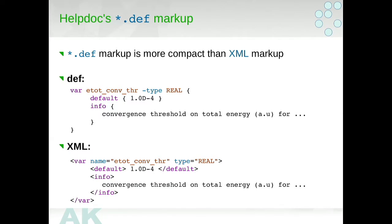It is twice more compact because if we just look at this default, we see default and colon value, but in XML, we have something like smaller and greater default, and then the closing tag. This is more compact, and from the user perspective, it is easier to write this than that. And then HelpDoc transforms this into that form.